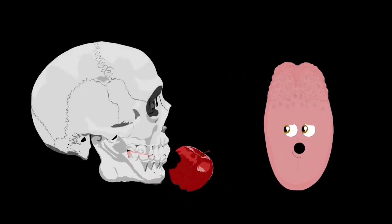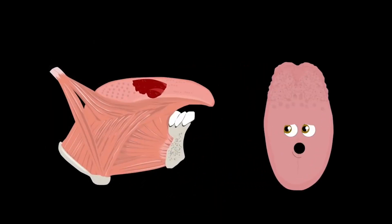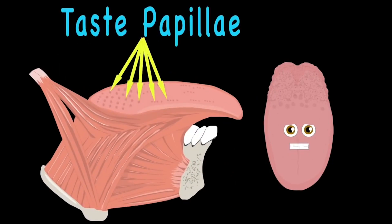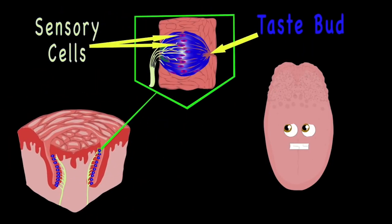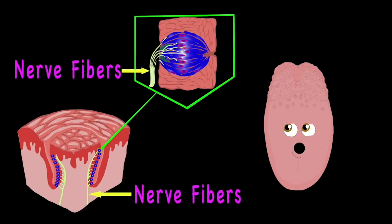When you bite into your food, the chemicals from foods release and sink into the taste papilla to the taste buds that run deep. Sensory cells transform chemicals into nerve signals that are sent into the brain through the nerve fibers they do go.